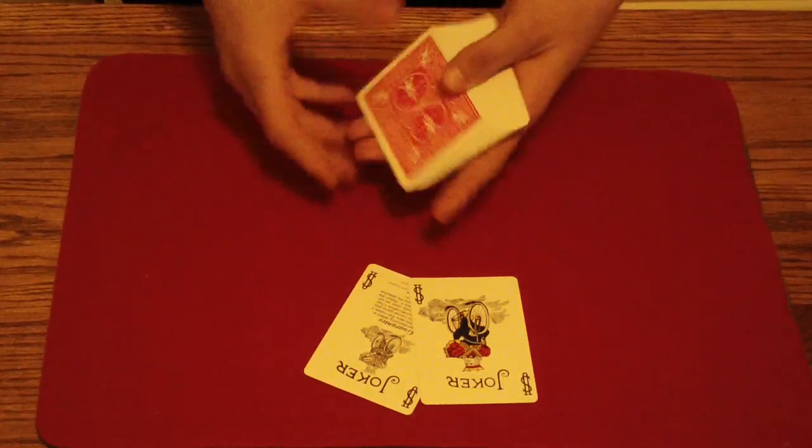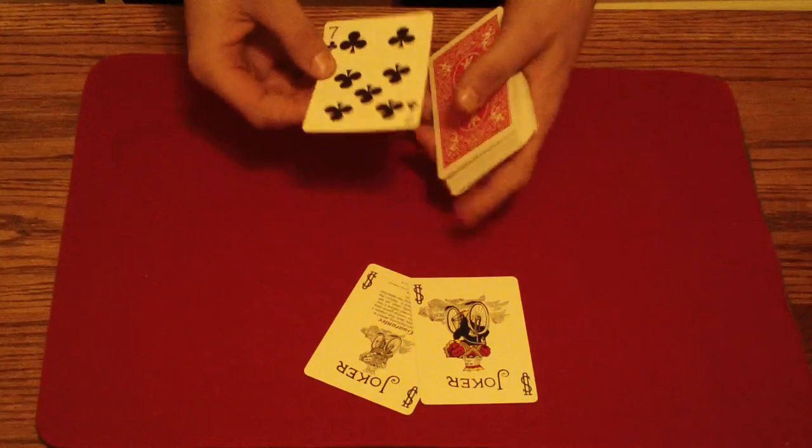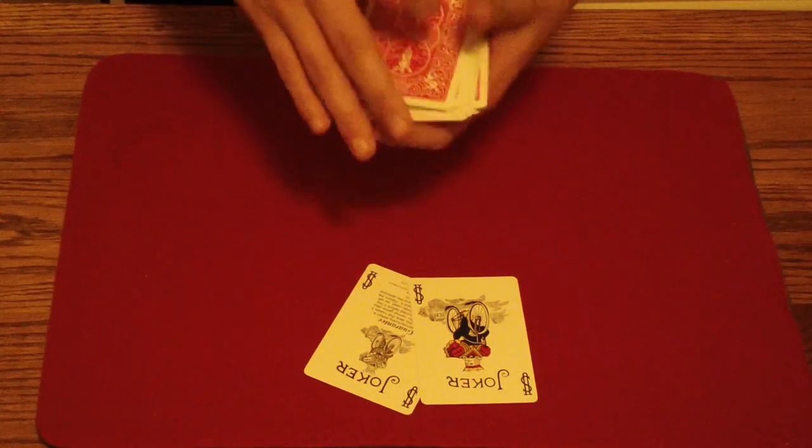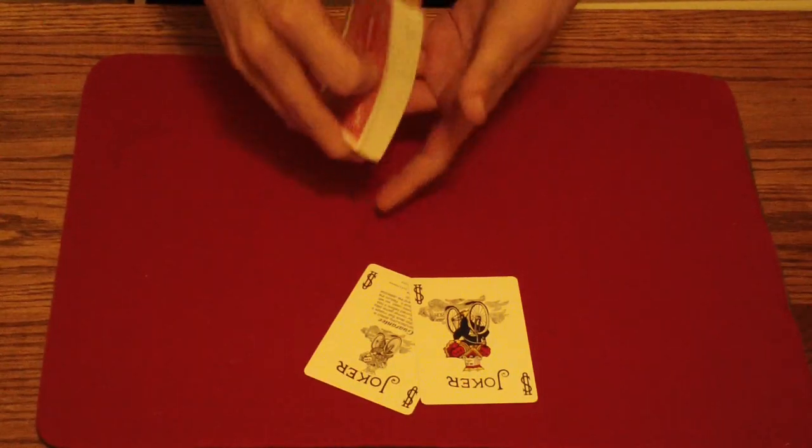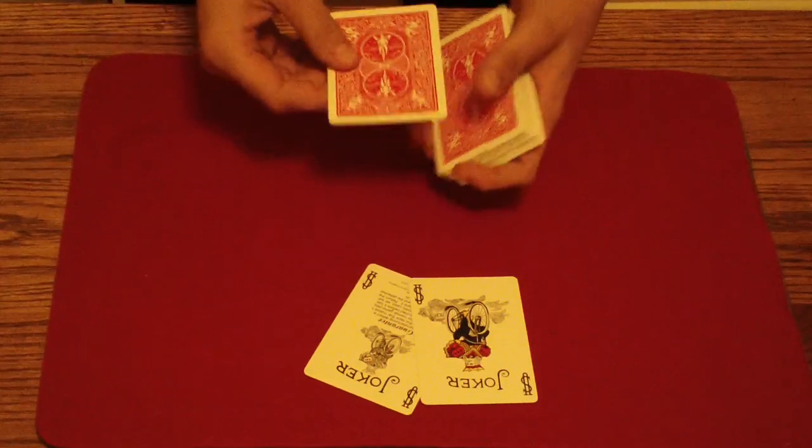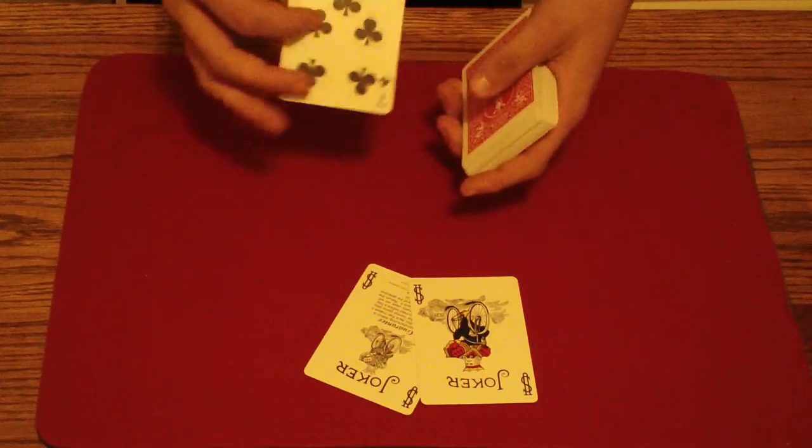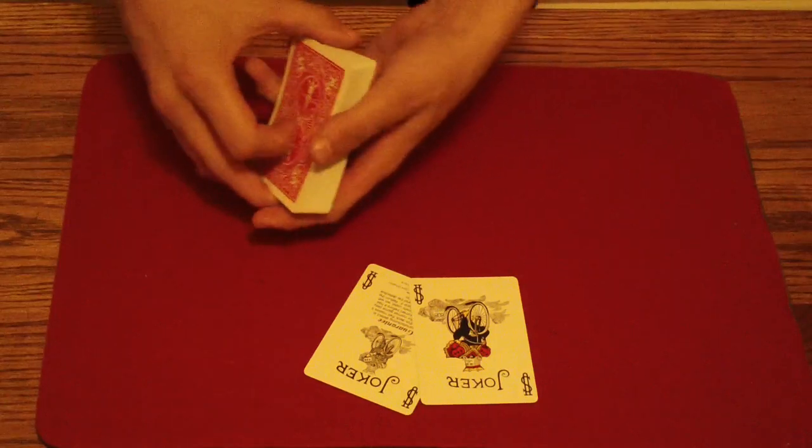Once you've done that, so once they've called out one card, you say the Seven, you can lose it, and you can do some false cuts or whatever you want, shuffle, keeping their card on top. And then what you need to do is you need to get a break above their card, under their card, and do a brow reversal.